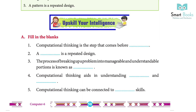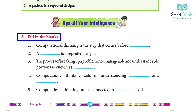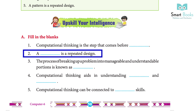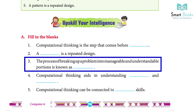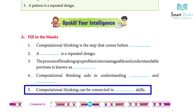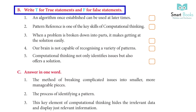Upscale your intelligence. A) Fill in the blanks: 1) Computational thinking is the step that comes before — answer: programming. 2) A blank is a repeated design — answer: pattern. 3) The process of breaking up a problem into manageable and understandable portions is known as — answer: computational thinking. 4) Computational thinking aids in understanding blank and blank — answer: patterns and sequence. 5) Computational thinking can be connected to blank skill — answer: reasoning.